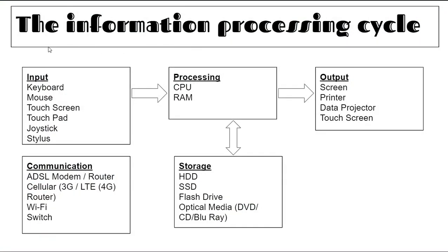In the information processing cycle we have looked at input devices. The most important ones for grade 12 are the keyboard, the mouse, touch screen like on a tablet or cell phone, touch pad like on a laptop, a joystick typically used by a gamer — or a controller on an Xbox, Nintendo Switch or PlayStation — and a stylus like you'd get with an iPad or Samsung Galaxy Note.